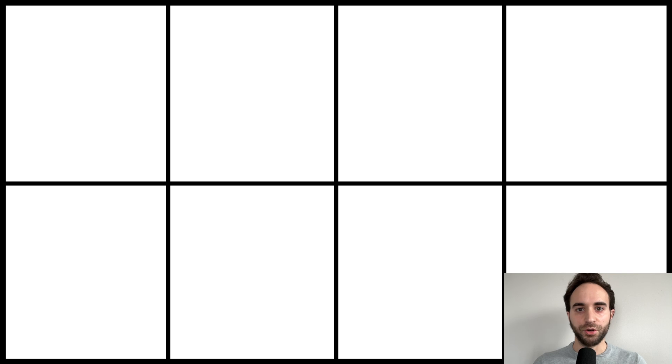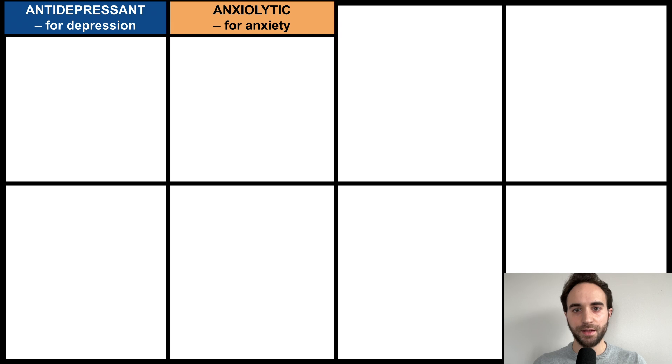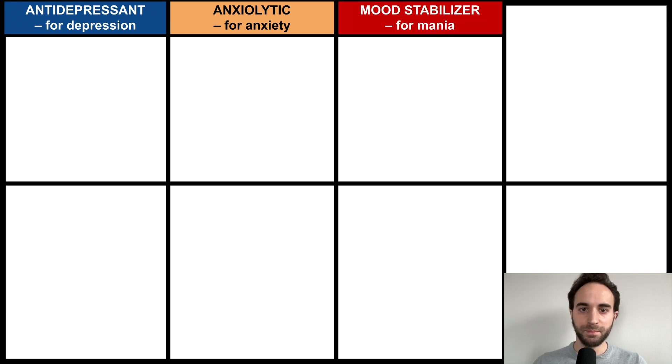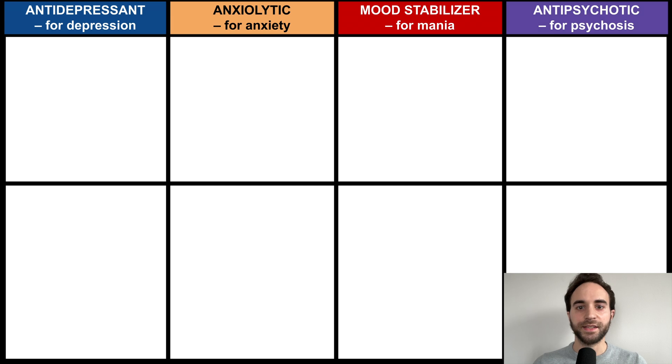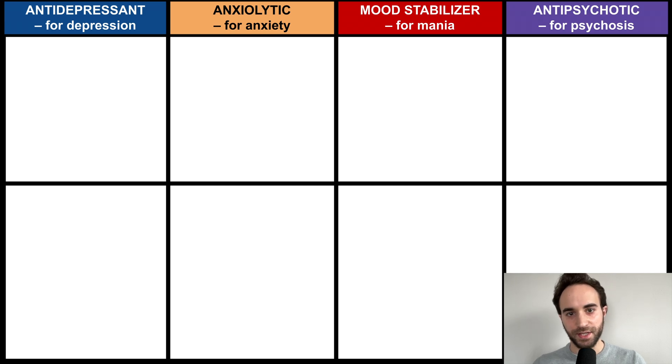The major classes of psychotropics include antidepressants, mainly used to treat depression; anxiolytics, mainly used to treat anxiety; mood stabilizers, mostly used for mania; and antipsychotics, mostly used for psychosis.